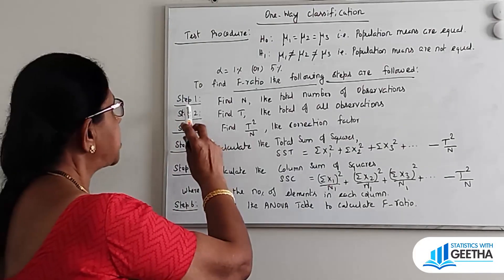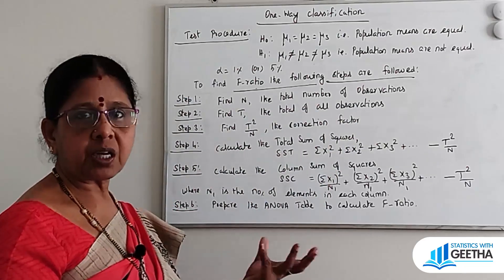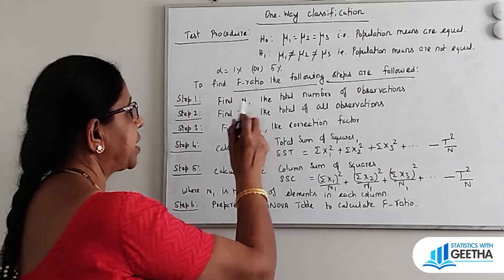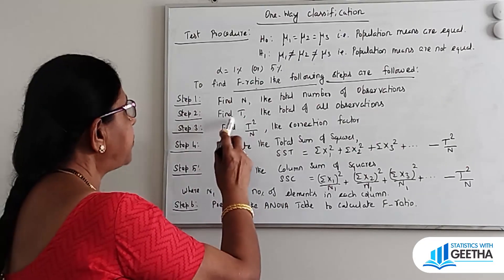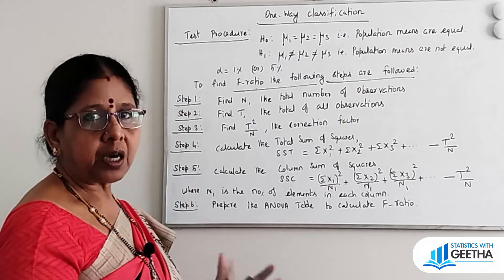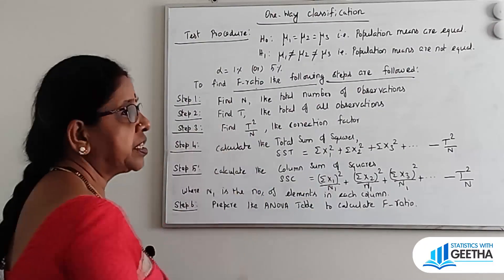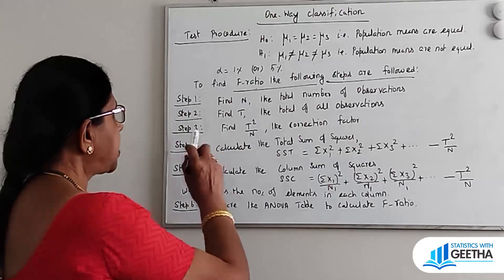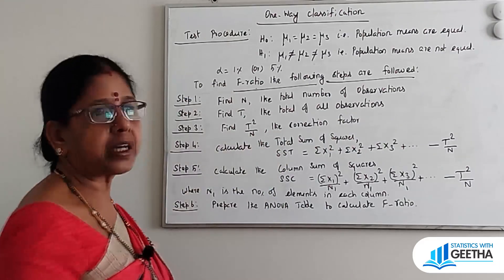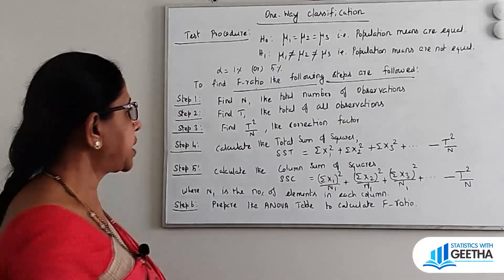Step 1: Find N, the total number of observations. Step 2: Find T, the total of all observations, denoted by capital T. Step 3: Find T²/N, the correction factor — T squared divided by capital N is called the correction factor.